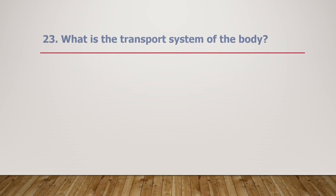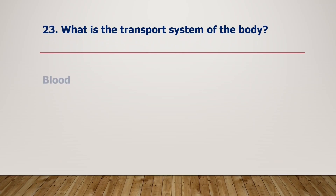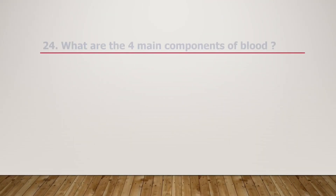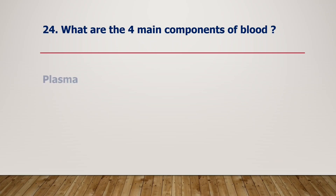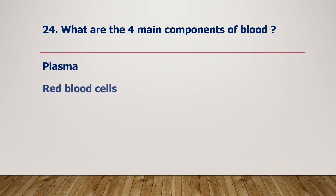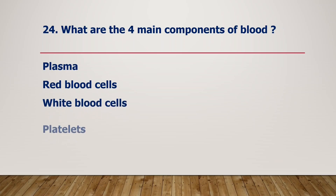What is the transport system of the body? Blood is the transport system. What are the four main components of blood? Plasma, red blood cells, white blood cells, and platelets are the four main components of blood.